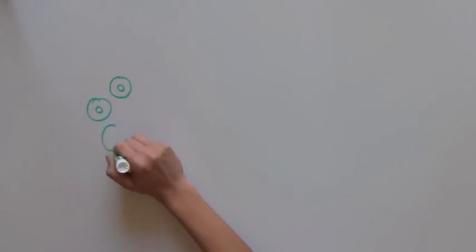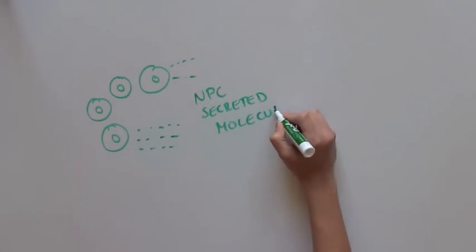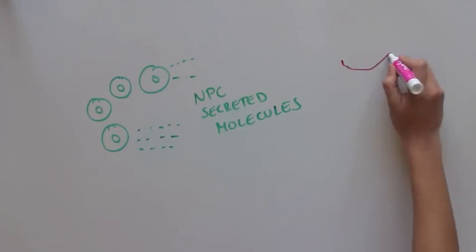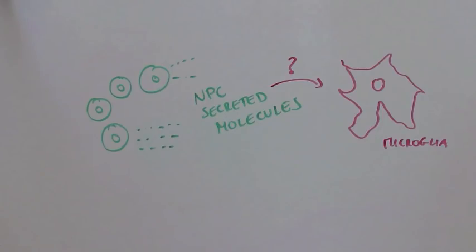Next, the scientists noticed that NPCs were also producing secreted molecules, and they wanted to see if these secreted molecules could influence microglia in a similar manner that microglia influence NPCs.